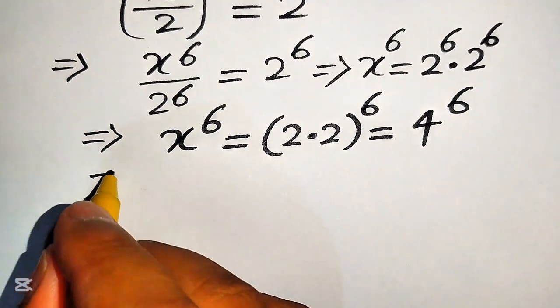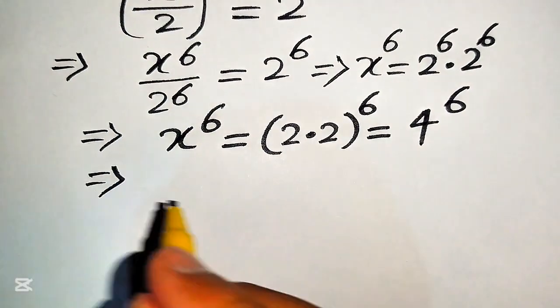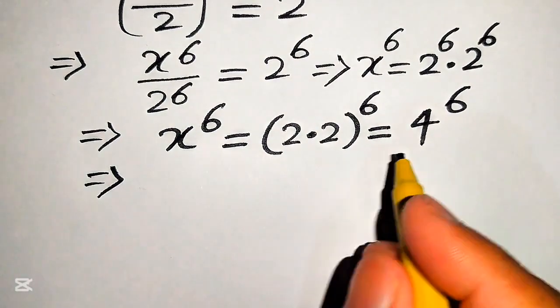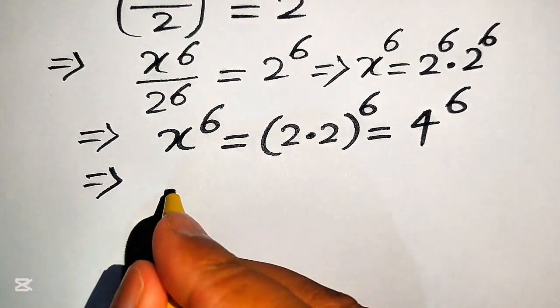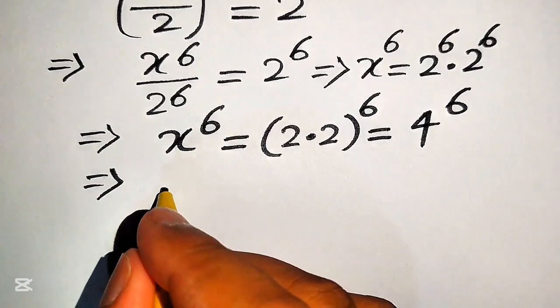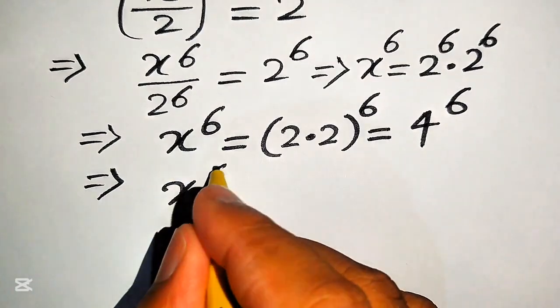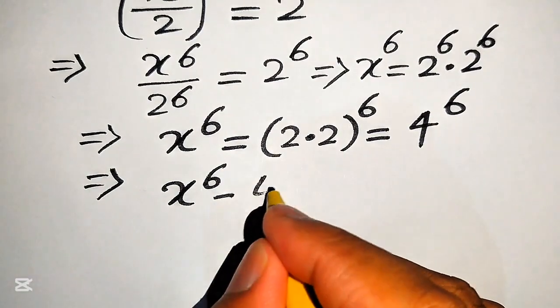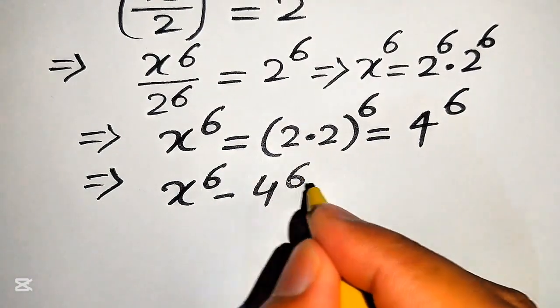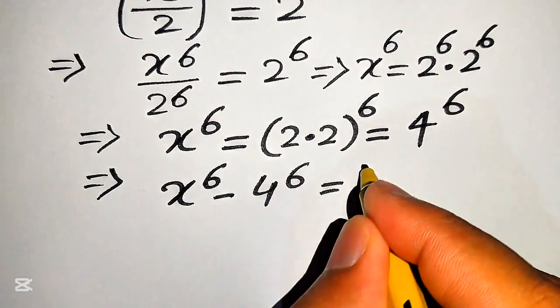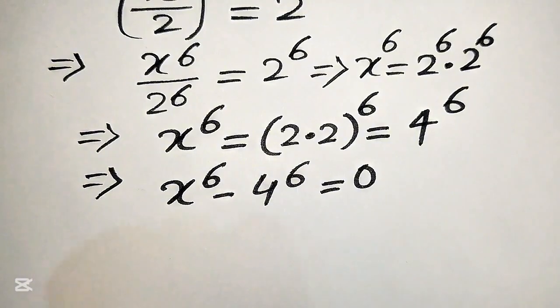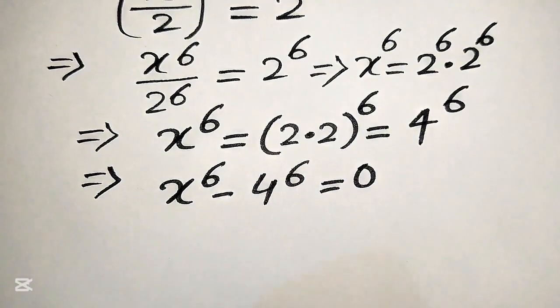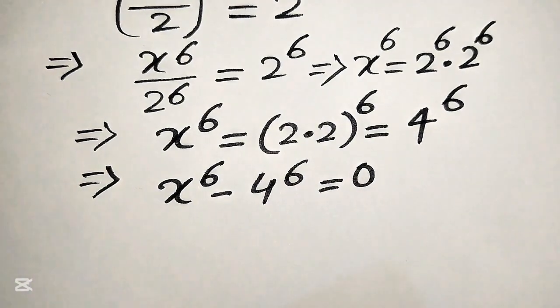Now in the next step we move the term 4 to the power of 6 to the left hand side, and it will be written as x to the power of 6 minus 4 to the power of 6, and this whole equation equals to 0.